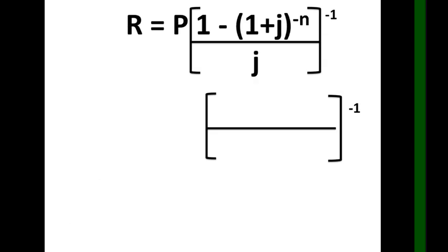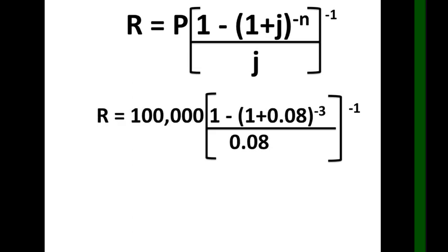Substituting into the formula: r equals 100,000 times the quantity 1 minus (1 plus 0.08) raised to negative 3, over 0.08, raised to negative 1. On your calculator, click 1 minus open parenthesis 1 plus 0.08 close parenthesis raised to negative 3, click equals, then divide by 0.08, click equals, then raise to negative 1.